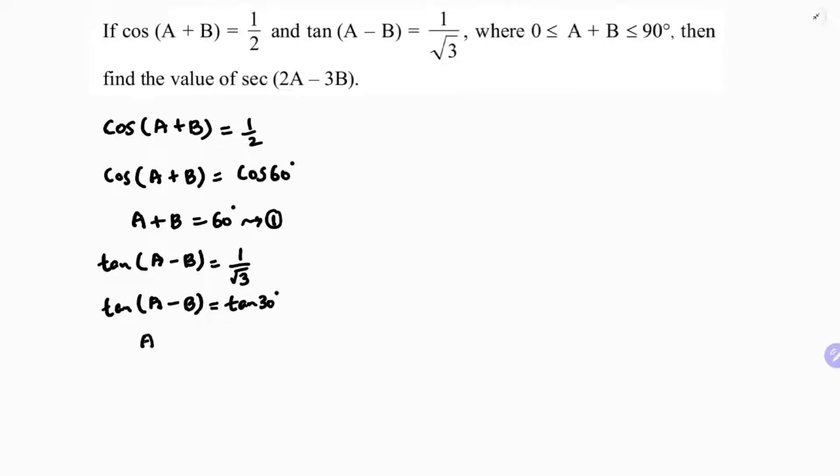On comparing, A - B is 30 degrees, so this is equation 2. Solving equations 1 and 2, these values you will get in the trigonometric table. The link I'll add in description for the values.